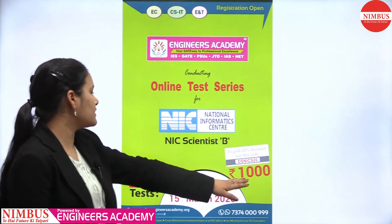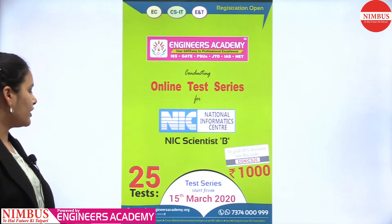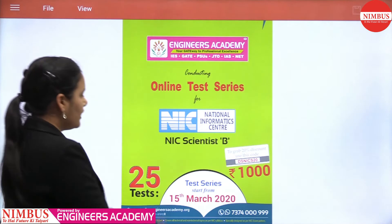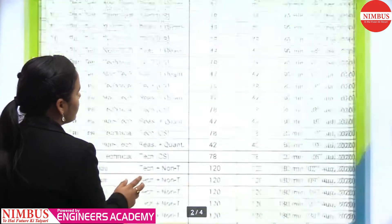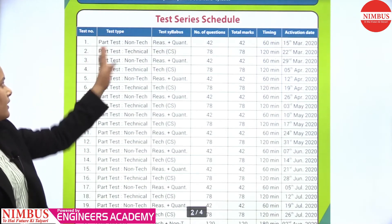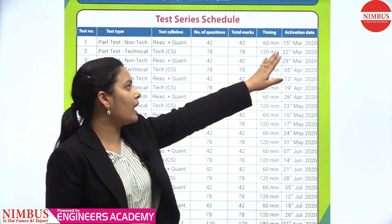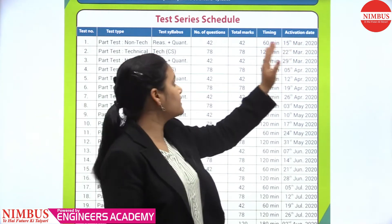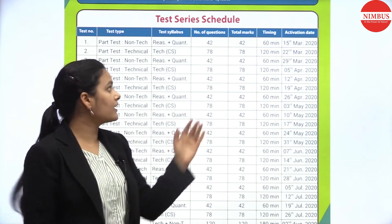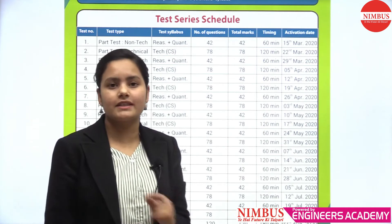In this test series, the price is 1000 rupees and discount is available for early enrollments. There are 25 tests going to be launched from 15th of March 2020. Looking at the schedule in detail: in the first test, you will be having a non-technical test happening on 15th of March. The questions will be from the non-technical part — that is reasoning, quant, or English — 42 questions for 42 marks and the time allotted will be 60 minutes.